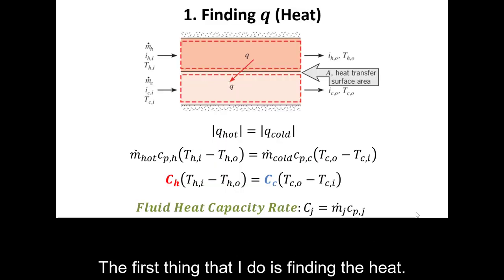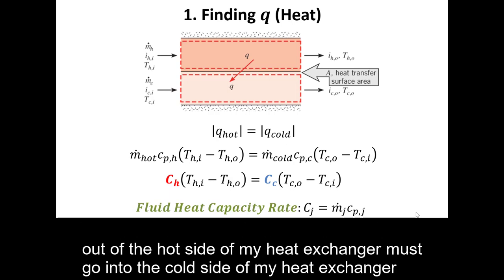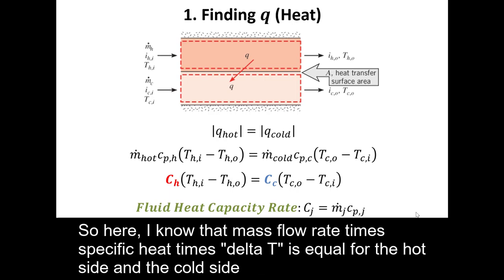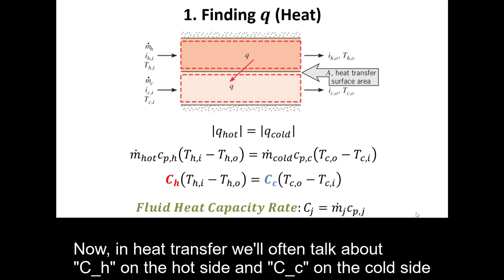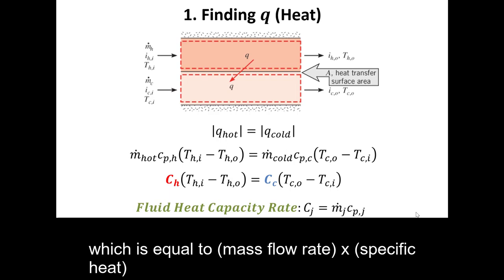The first thing that I do is finding the heat. For heat exchangers, if I'm neglecting heat losses to the surroundings, all the heat that comes out of the hot side of my heat exchanger must go into the cold side. So m-dot times Cp times delta T is equal for the hot side and the cold side. In heat transfer we'll often talk about capital C sub H on the hot side and capital C sub C on the cold side, where capital C is the fluid heat capacity rate, which is equal to m-dot times Cp.